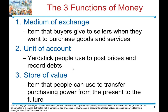There are three functions of money. Number one, medium of exchange: items that buyers give to sellers when they want to purchase goods and services. Number two, unit of account: a yardstick people use to post prices and record debts. Number three, store of value: an item that people can use to transfer purchasing power from the present to the future.